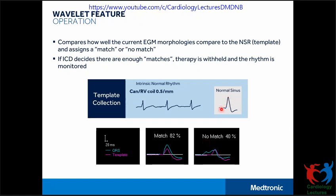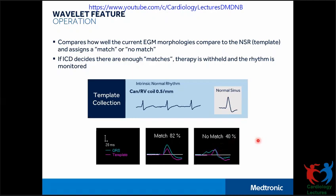Wavelet actually collects a template during sinus rhythm and then compares the stored template with the current EGM morphology. It assigns a match score as a percentage and calls a complex a match if this match score is equal to or more than 70, as seen in this image. On the right side it says 'no match' with 40 percent, meaning it is below the match threshold which is normally set at 70. On this basis it determines whether it's an SVT or a VT.